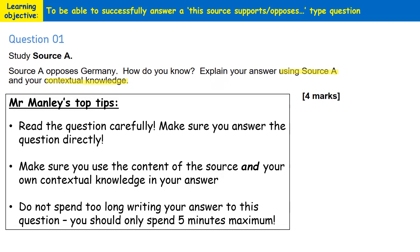Let's run through the top tips individually. First, read the question really carefully and make sure you answer it directly. Don't be sidetracked into answering about a related topic — stick to the topic in the question. Secondly, make sure you use both the content of the source — whether it's a visual source like a cartoon or a written source where you can quote from it — and also your own contextual knowledge. If you only do one of those, the maximum marks you can achieve is two out of four. Use both and you can get full marks. Don't spend too long — it's only a four mark question, so a maximum of five minutes.